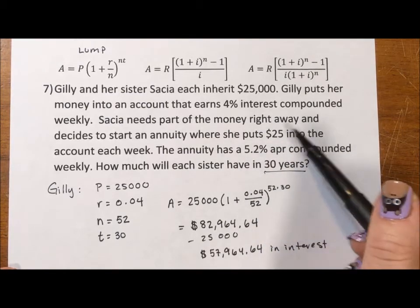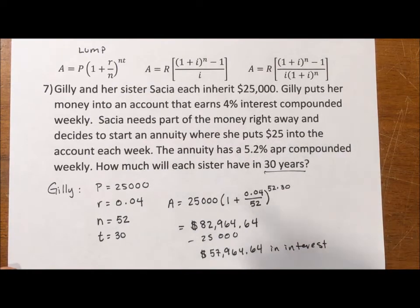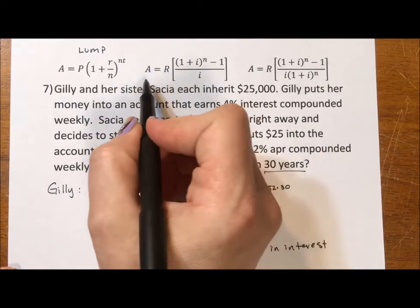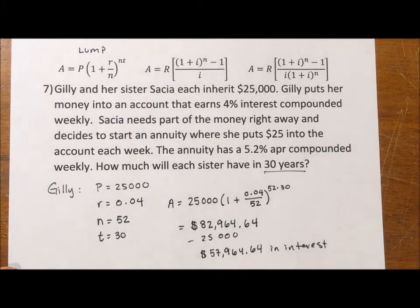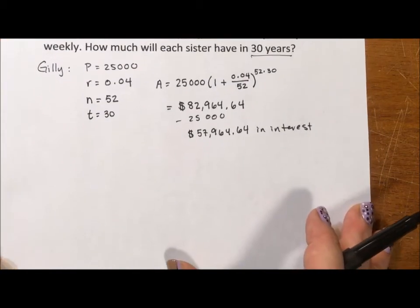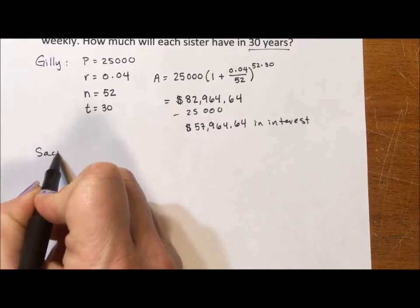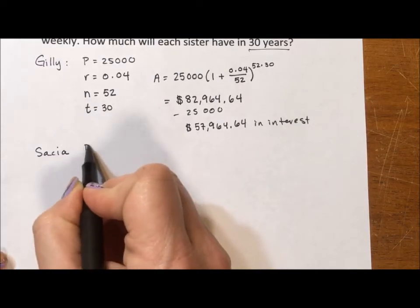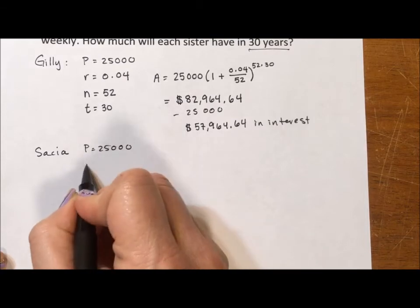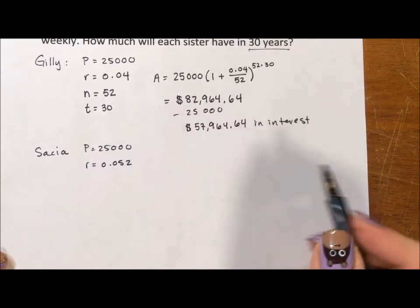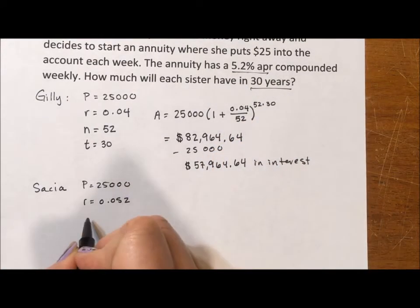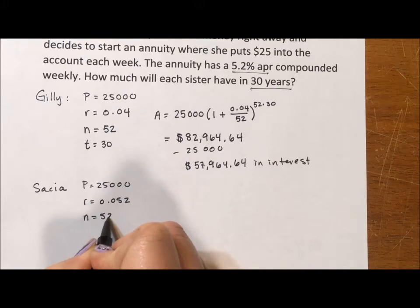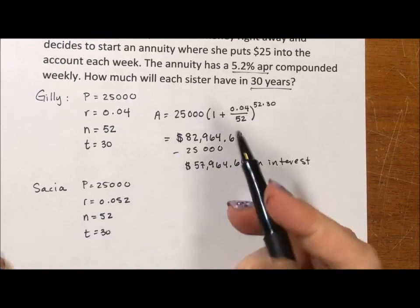Now for Saisha, because she's putting $25 each week and she's growing it slowly, we use the second equation. The second equation basically says, you repeatedly put money into an account, how much do you have? That's not what the R stands for, that's our annuity formula. Okay, so for Saisha, she still has the same principle of $25,000. Her interest rate is 0.052, 5.2% divided by 100.